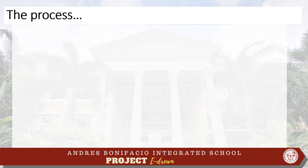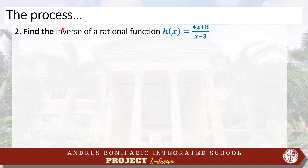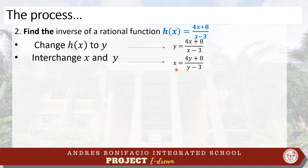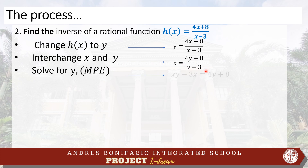To show you the process of finding the inverse of a function, let us do example number 2. Find the inverse of a rational function h(x) = (4x + 8) / (x − 3). The first thing to do is to change h(x) to y, so it goes like this: y = (4x + 8) / (x − 3). Next, we are going to interchange x and y. So, interchanging x and y, we will come up with x = (4y + 8) / (y − 3).